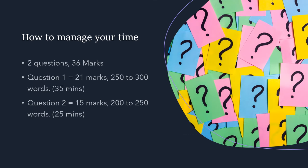For this exam, it's really important that you manage your time. You have two questions, that's 36 marks in total. Question one gets 21 marks and requires 250 to 300 words, so it's looking for a lot more detail - use a lot of descriptive words and adjectives to paint a picture for the audience. Question two is a much shorter written response, usually something like an email, requiring about 200 to 250 words and around 25 minutes. Question one requires greater depth; question two a little bit less, but keep an eye on those key skills mentioned earlier.